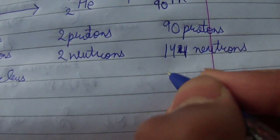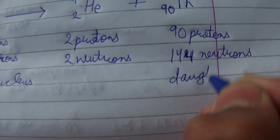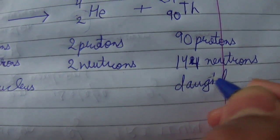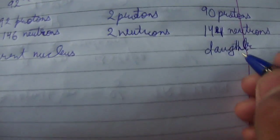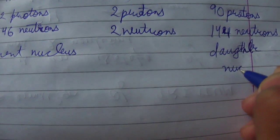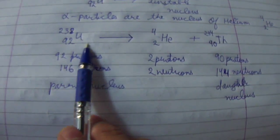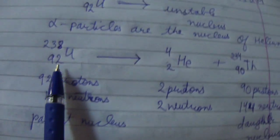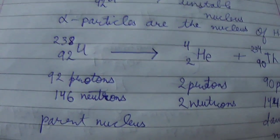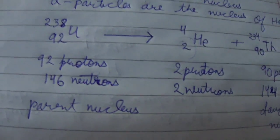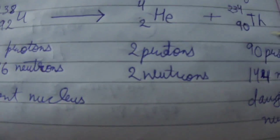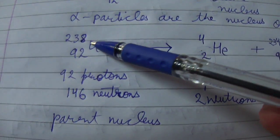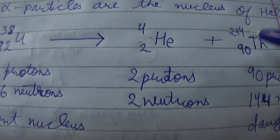This is the daughter nucleus. In the alpha emission of uranium, the atomic number is decreased by 2 units and the mass number is decreased by 4 units.